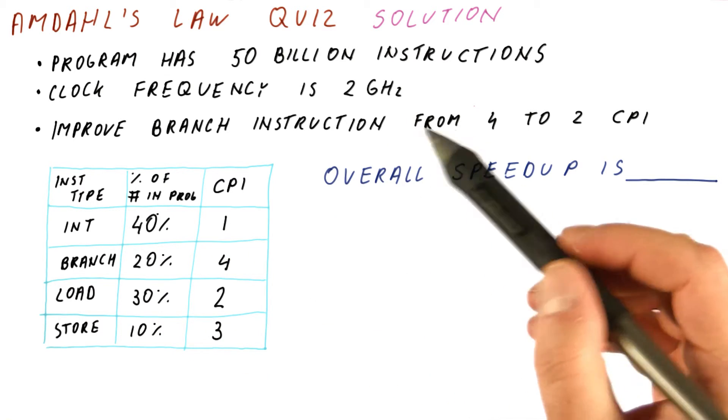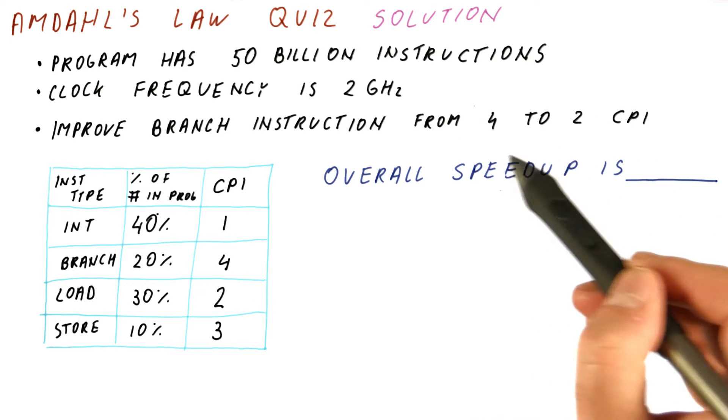And this is the original CPI. And the improvement we have is that the branches have improved from 4 to 2 CPI.